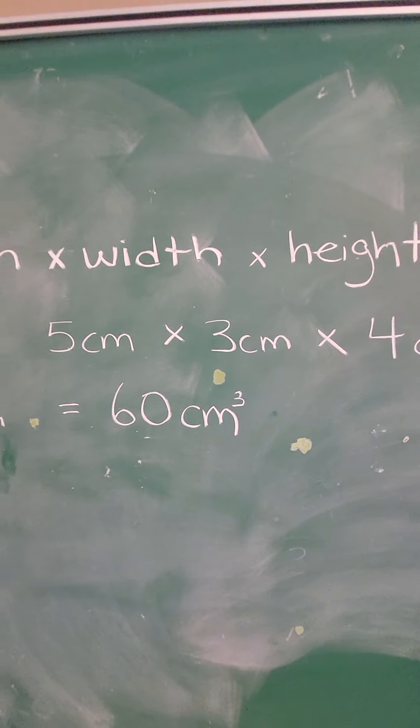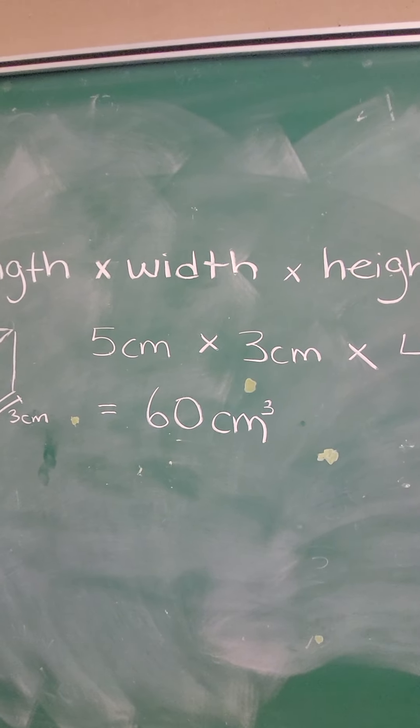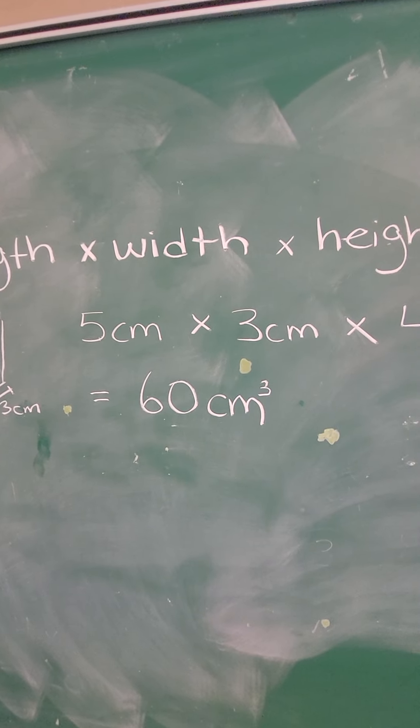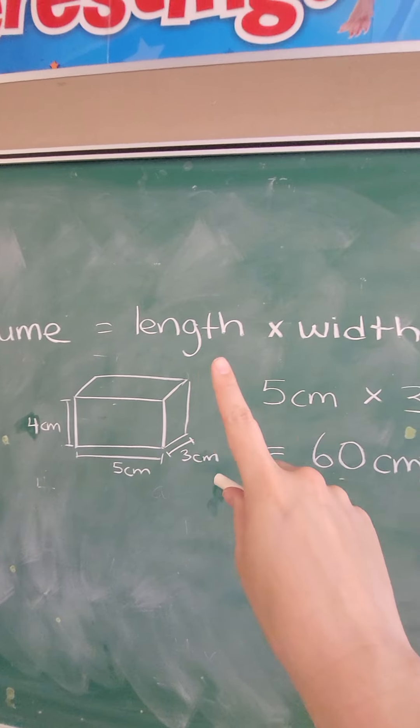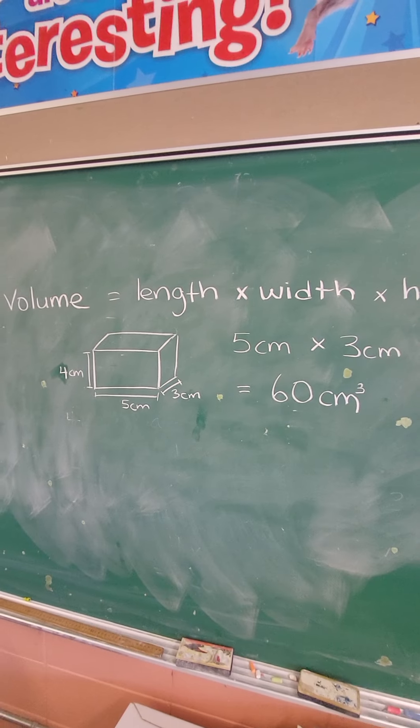And how we read that is cubed. So 60 centimeters cubed, or 60 cubic centimeters, either way, that is volume, because it's 3 dimensions, length times width times height. That's how you figure out volume.